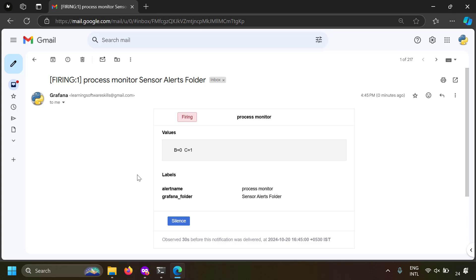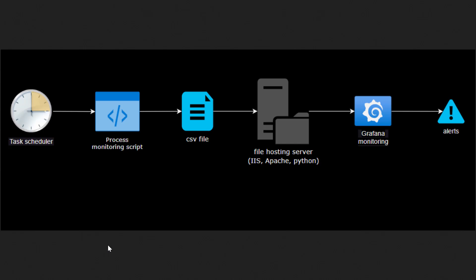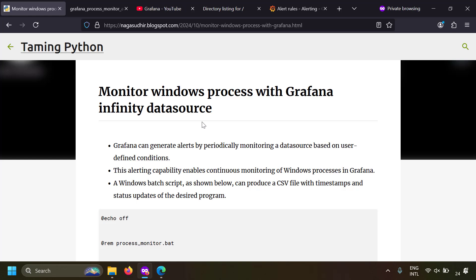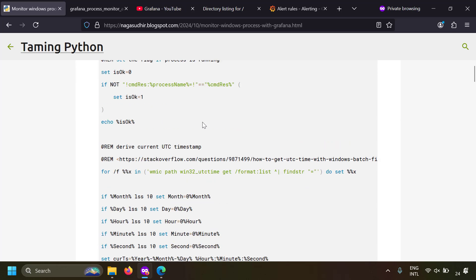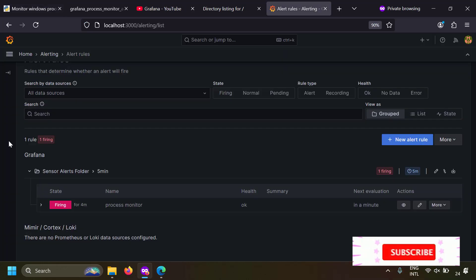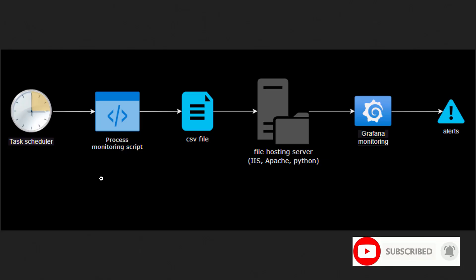To summarize: we wrote a batch script that updates a CSV file continuously via task scheduler, indicating whether a process is running or not. We hosted the CSV file on a file server (IIS, Apache, or Python) to get a URL. Then we configured Grafana's Infinity data source to monitor the CSV through that URL and trigger an alert if the value is 0. Check the blog post for notes, images, and source code. Please ask questions or leave feedback in the comments. Thanks for watching!